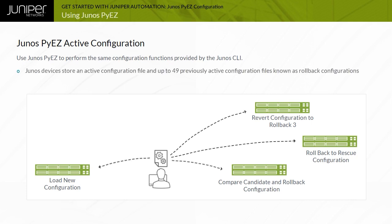Up to 49 previously active configurations are automatically stored locally on the Junos device, providing the opportunity to roll back the device configuration if necessary.